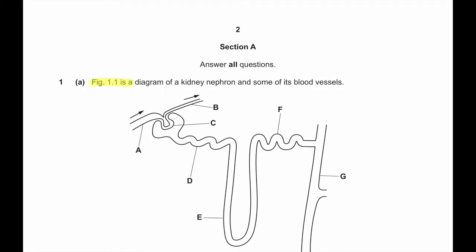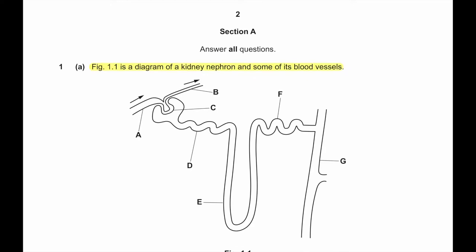Question number 1A. Figure 1.1 is a diagram of a kidney nephron and some of its blood vessels. We can see A, which is the afferent arteriole. B is the efferent arteriole. C is Bowman's capsule or renal capsule. D is proximal convoluted tubule or PCT. E is loop of Henle. F is distal convoluted tubule or DCT. G is collecting duct.